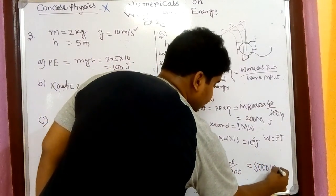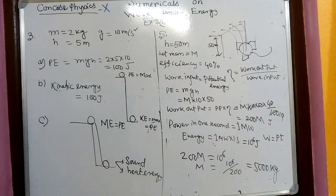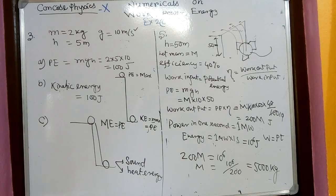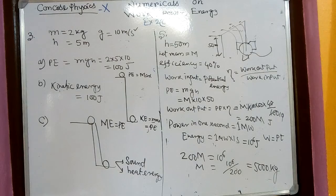Mass m equals 5000 kg — that much water must flow each second at that height to generate 1 megawatt. Practice all the numericals given here; if you have any doubt in any numerical you can ask me. Thank you.